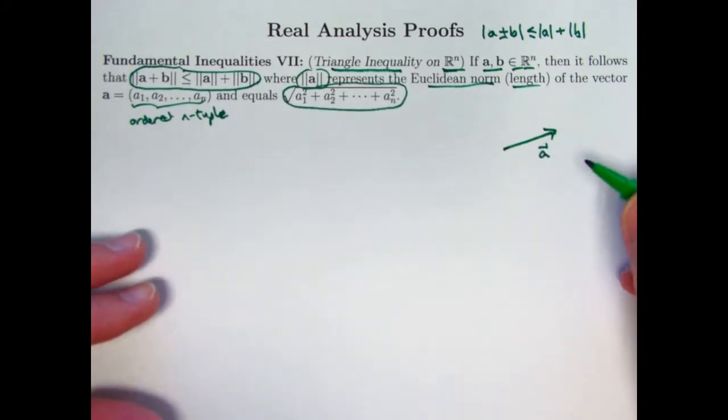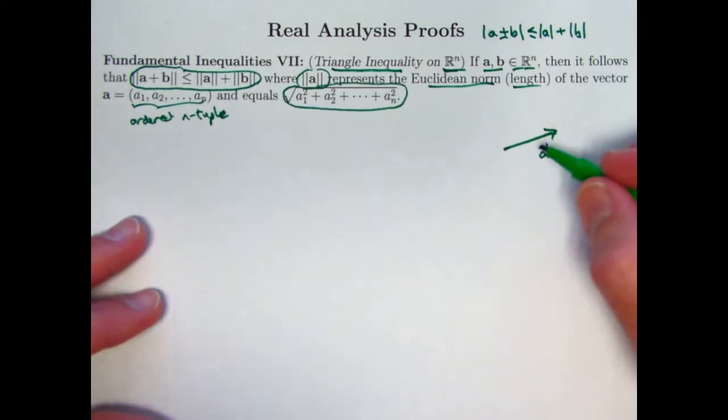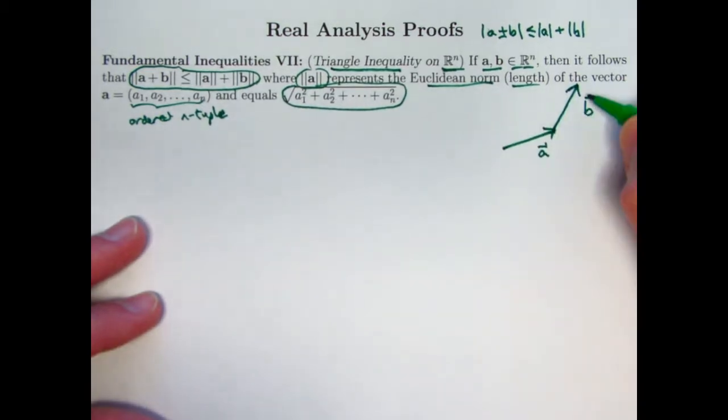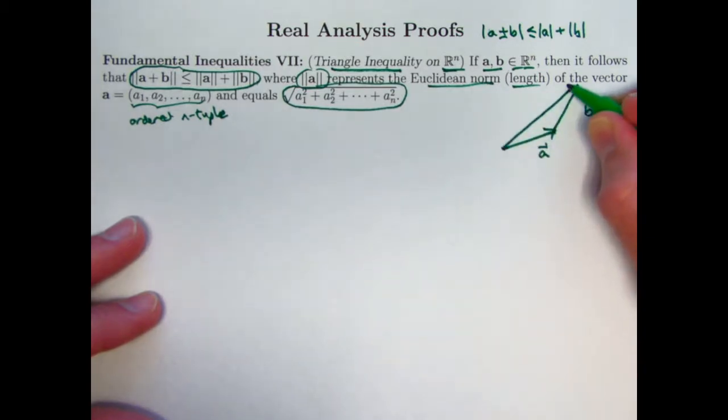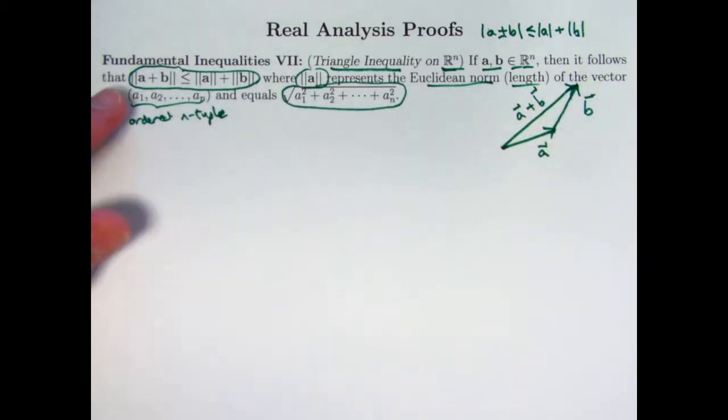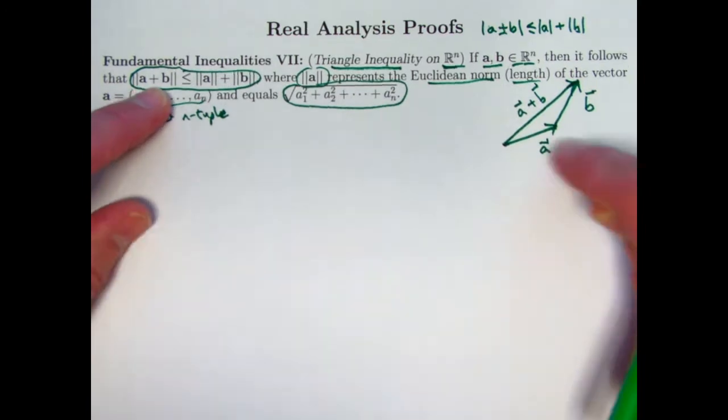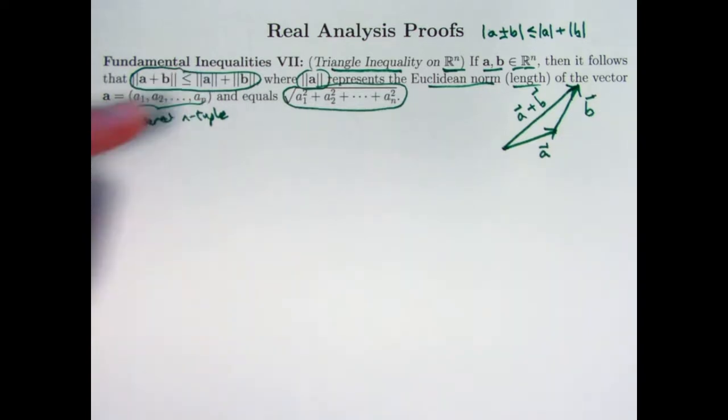When I add a and b, if b is some other vector with some other direction and some other length, and if you put the base of b at the tip of a, say b looks like this, then the sum of a and b turns out to be an arrow such that if you base it at the base of a, its tip is at the tip of b. This is a plus b here. So what the triangle inequality says in this case is related to this triangle. It says the length of a plus b, the length of this side of this triangle, is less than or equal to the sum of the lengths of the other two sides.